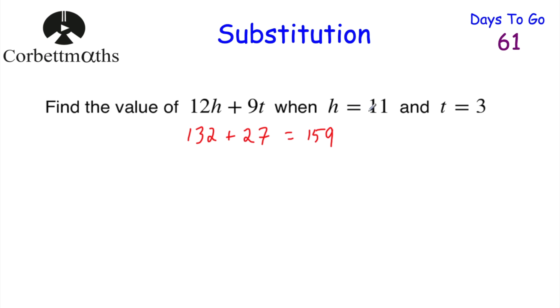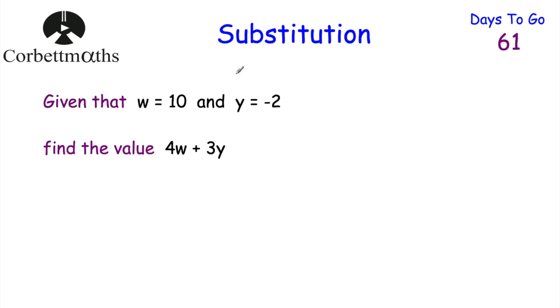132 plus 27 equals 159. So if h equals 11 and t equals 3, 12h plus 9t equals 159. And that's it. Let's have a look at our next question.